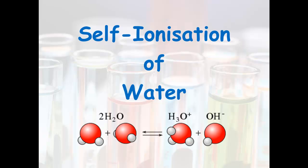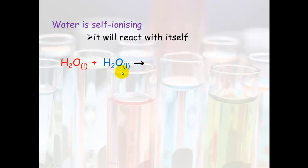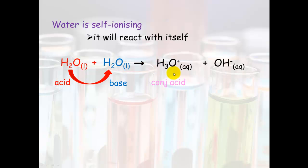Self-ionization of water: water is self-ionizing, which means it will react with itself. If we have two water molecules, one can act as an acid and one will act as a base, transferring a proton to the other water molecule. What you get is the hydronium ion — the water molecule that has gained one hydrogen — and also the hydroxide ion.